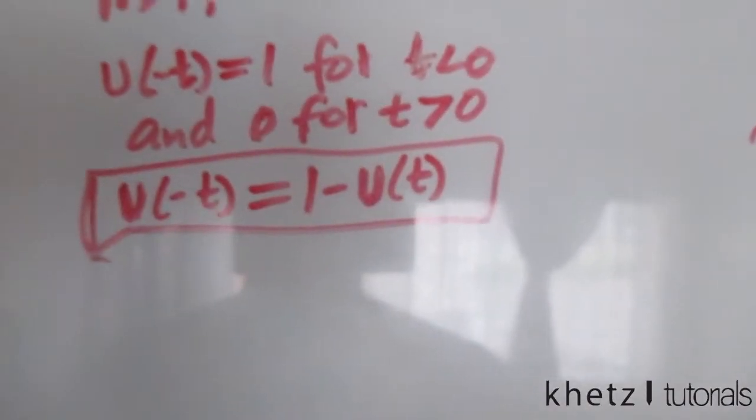We're asked to find i(t) and v(t) for all time, which means we have to cover t less than zero. For t less than zero, the u(-t) source is active, so the circuit is a 20-volt source with the 5-ohm resistor. The capacitor is an open circuit to DC, and the right part of the circuit is not connected since the switch only closes at t = 0.